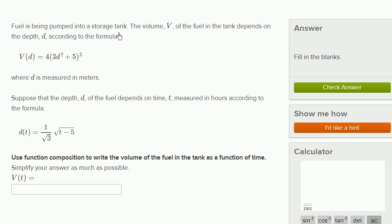Fuel is being pumped into a storage tank. The volume V of the fuel in the tank depends on the depth d according to the formula V(d) = 4(3d² + 5)³, where d is measured in meters.